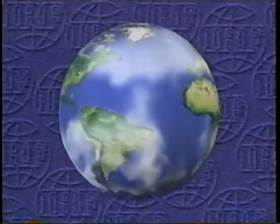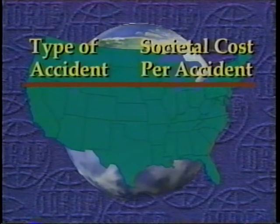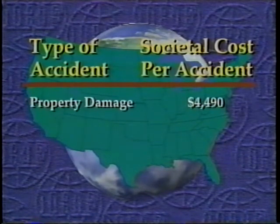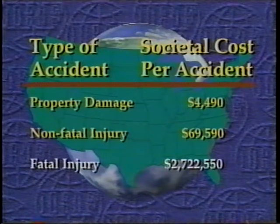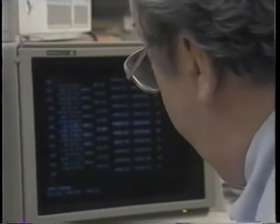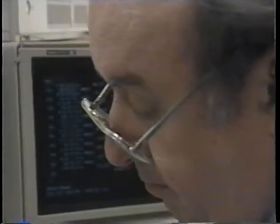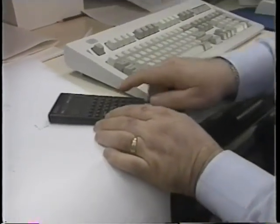The cost of an accident will vary depending on the country and jurisdiction. In the United States, the Urban Institute estimated societal costs in 1988. The costs associated with motor vehicle accidents and injuries were $4,490 for property damage, $69,590 for non-fatal injury, and $2,722,550 for fatal injury. Based on the average distributions of types of accidents, Bill can determine the average cost per accident. In 1988, one state estimated that the average cost per accident was $51,770.